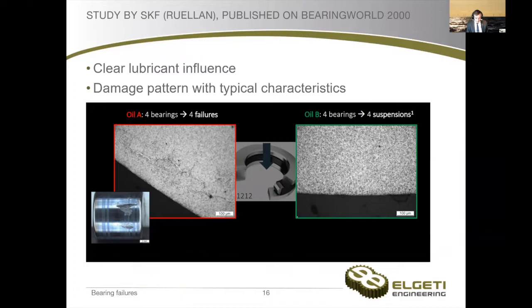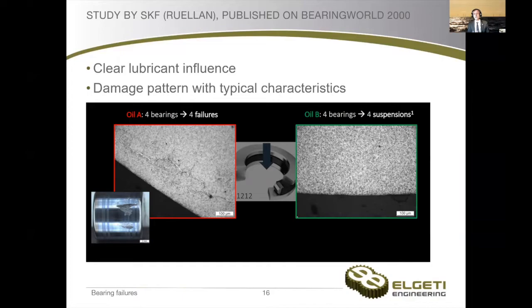Without jumping to conclusions, contamination might be an issue — but at least what we saw is that the oil in the condition as it was on the turbine was not good, was poisonous to the bearing, and therefore caused white etching cracks. And if we have an 18-year-old gearbox and nothing else changed, we can be pretty sure that the oil change was the root cause. While just from these observations, we will not be 100% sure whether it has something to do with the contamination or whether the oil itself was not okay from the very beginning — but this is something to be further analyzed and discussed.